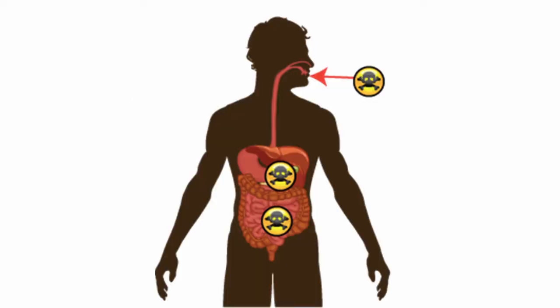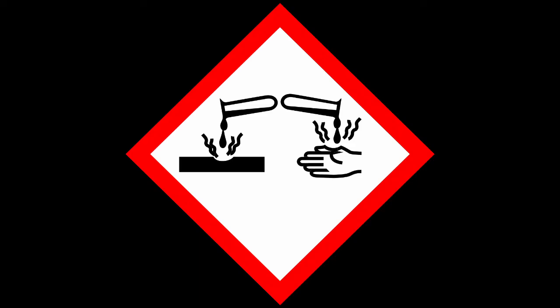Ingestion: people transfer chemicals from their hands to their mouths by eating, smoking, etc., without washing first. Skin contact: some substances damage skin while others pass through it and damage other parts of the body.